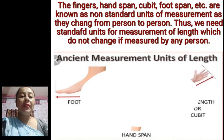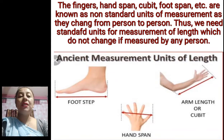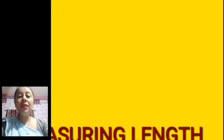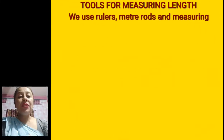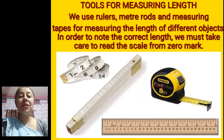So fingers, hand span, cubit, foot span, etc. are known as non-standard units of measurement. As they change from person to person, we need a standard unit for measurement which does not change from person to person. Now for tools for measuring length, we use rulers — everyone has used a ruler in math class — meter rods, and measuring tapes. These all are used for measuring different objects.